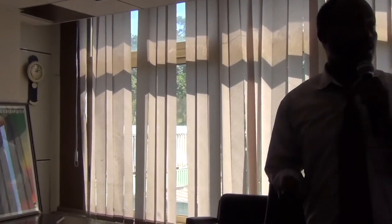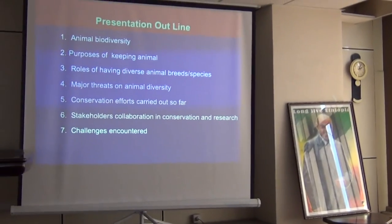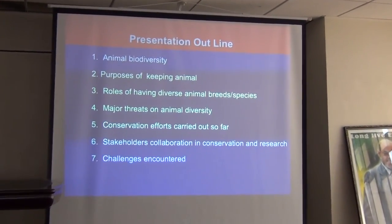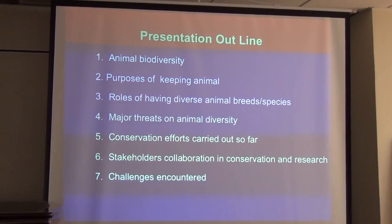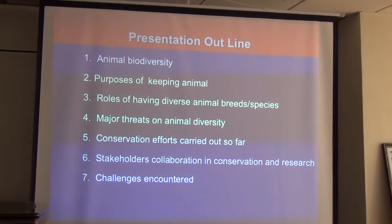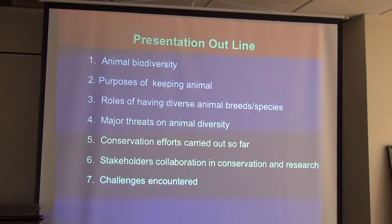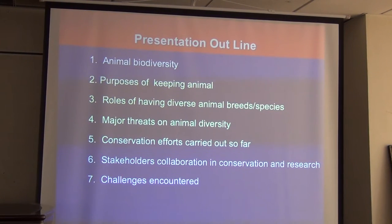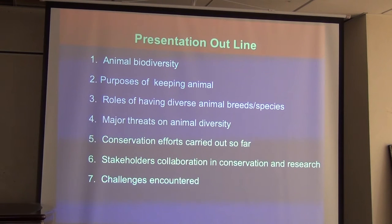My presentation has the following outline. I'll say something about what animal biodiversity is and how we approach it in our research and conservation activities. We'll also see the purpose of keeping animals, especially in agrarian society. When we discuss animal diversity, we refer to breeds and species — domestic animal breeds, and aquatic and wild animal species.